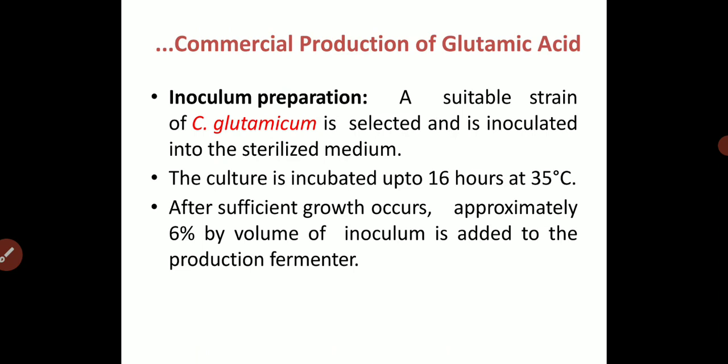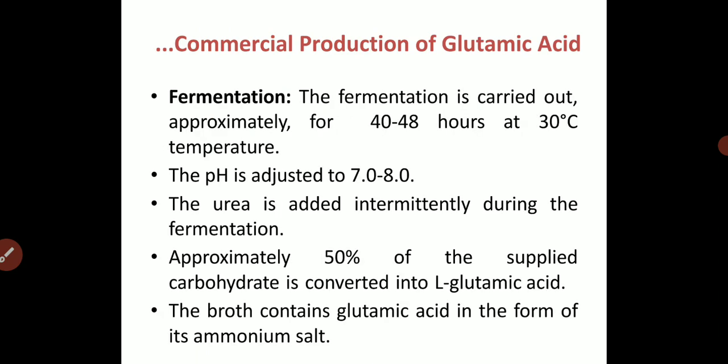Once the inoculum is prepared, it is transferred to the production media. Fermentation is carried out for approximately 40 to 48 hours at 30°C. The pH is adjusted to 7 to 8 units, and urea is added intermediately during the fermentation process. Approximately 50% of the supplied carbohydrate is converted into glutamic acid, meaning 50% of the given carbon source is entirely converted into glutamic acid after fermentation.